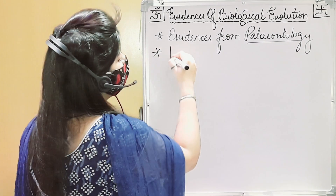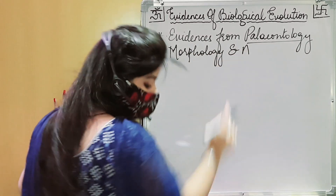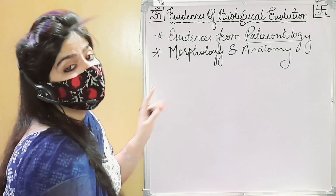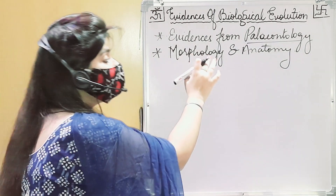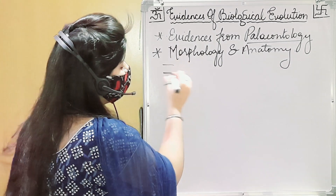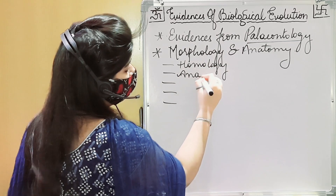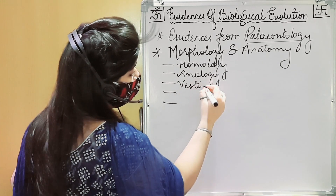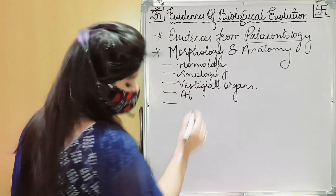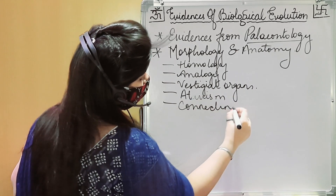The second thing is morphology and anatomy. This is the major topic of this chapter, and we will study five subheadings within it. Those five subheadings are: homology, analogy, vestigial organs, atavism, and last — connecting links.